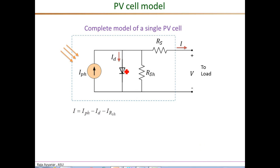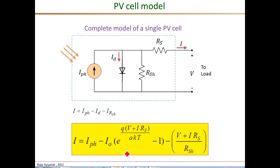We had developed this single diode model of the PV cell earlier, with the photon-generated current modeled as the current source. Our model also included the two parasitic resistances, namely the shunt resistance and the series resistance. The external current I is the photon current I_pH minus the diode forward bias current minus the leakage current modeled as the current through the shunt resistance. Our final expression for the external current I includes the photon current, the forward bias diode current, and the leakage current in the shunt resistance.